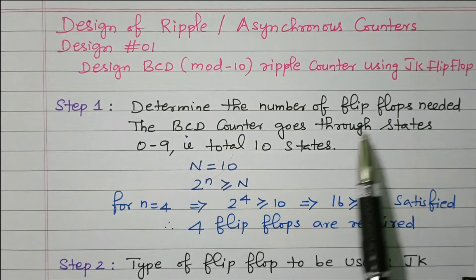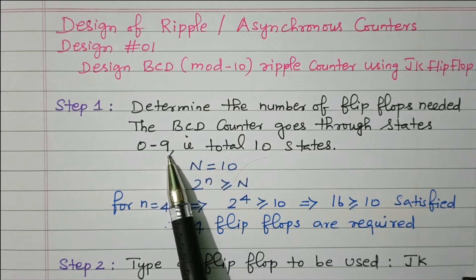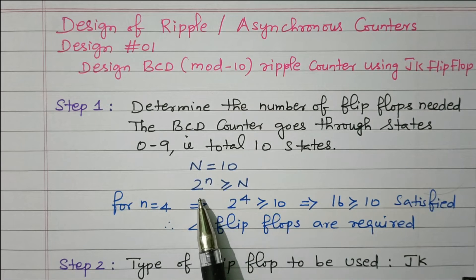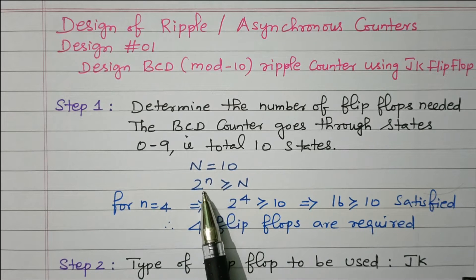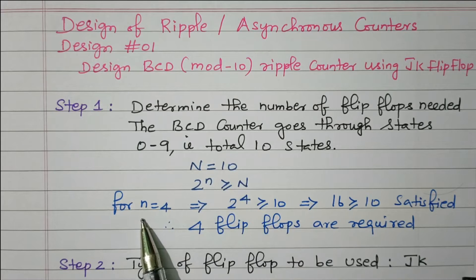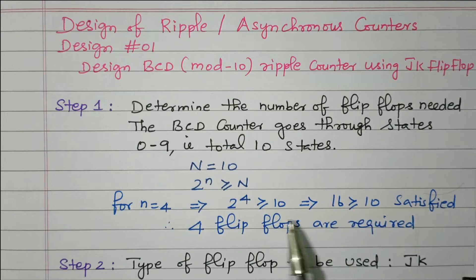First step: determine the number of flip-flops needed based on the combination. Mod-10 means we need to decide the number of flip-flops. The BCD counter goes through 0 to 9 — that is 10 total states, so N equals 10. The condition is: 2 to the power n ≥ N, where N is the number of states and n is the number of flip-flops. We know 2 to the power 4 is 16, and 16 ≥ 10, so this condition is satisfied. Therefore, n equals 4 — we need 4 flip-flops.